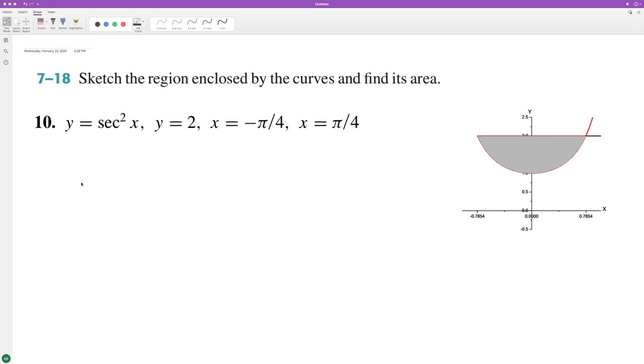Find the integral for the area from negative pi over four to pi over four. We're integrating secant squared x dx from—oh, excuse me, it's from two, so it's gonna be two minus secant squared x from negative pi over four to pi over four.